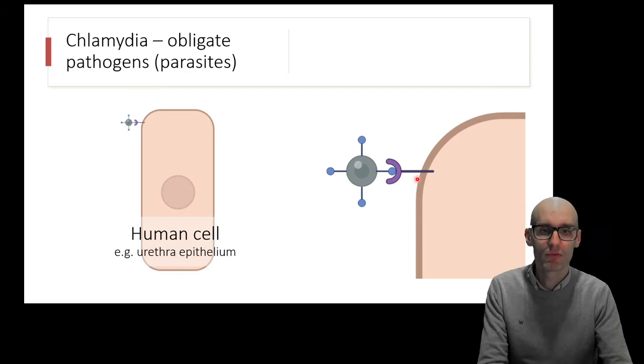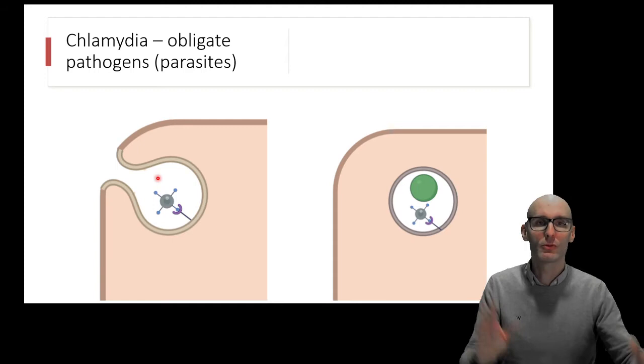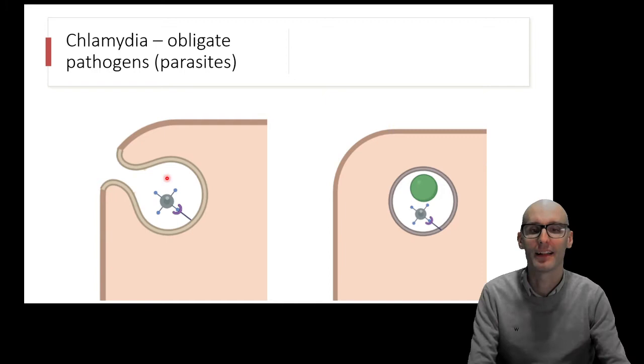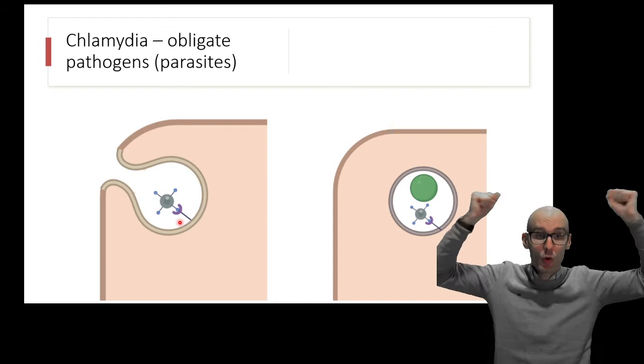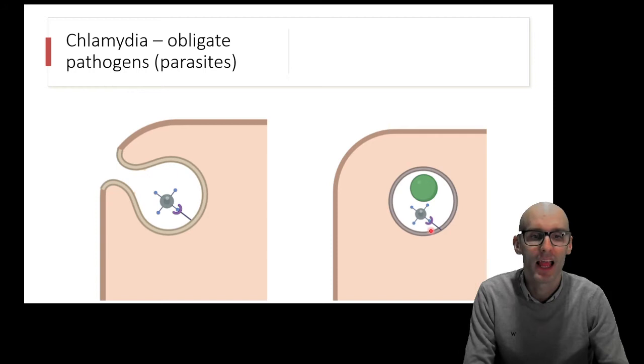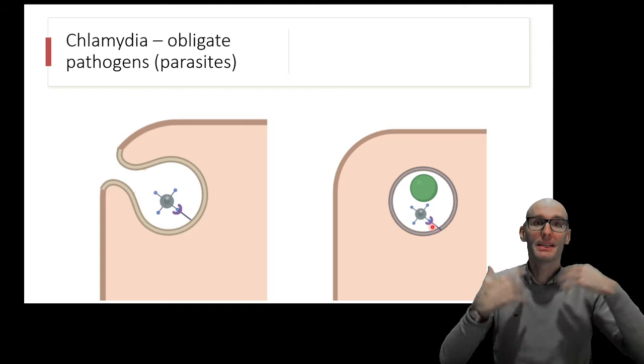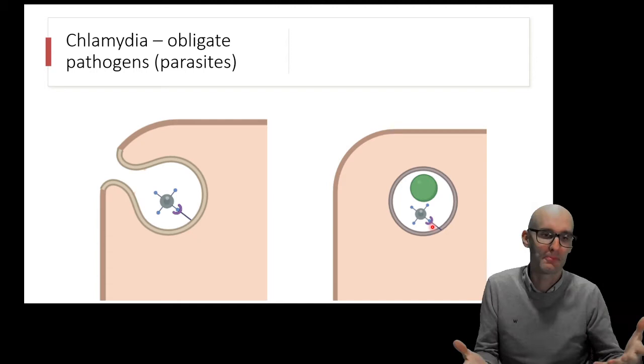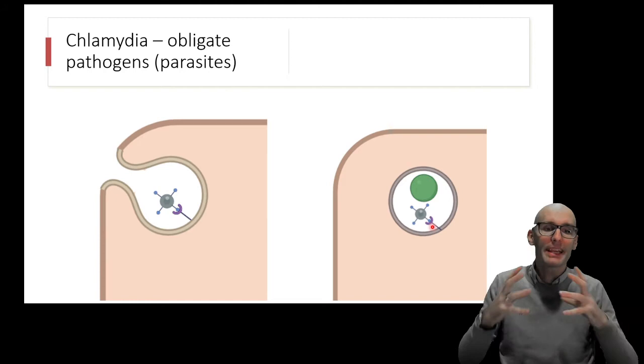That protein on the surface is going to bind to a protein on the surface of the human cell. Here we have, for example, a urethra epithelium, because chlamydia is a sexually transmitted disease. It can grab onto this protein jutting out of this human cell. It will then keep grabbing more and more membrane, dragging itself into the cell, and it creates a vacuole inside the cell. Those proteins grab more receptors and signal to the cell to envelop it.